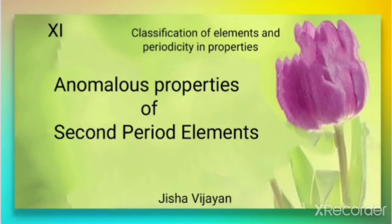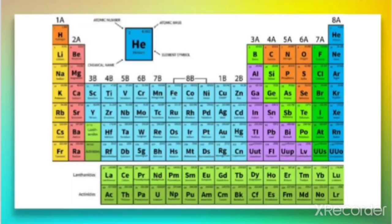Let us discuss anomalous properties of second period elements. As discussed in the previous video, elements in a group have the same valence electrons and the same valency. For example, in Group 1, lithium, sodium, potassium, rubidium, and cesium all have the same valence electron and valency equal to one. Because of this, they show similar physical and chemical properties.